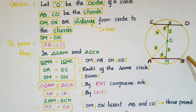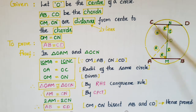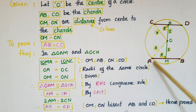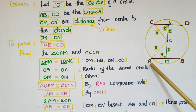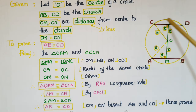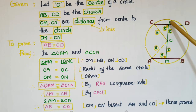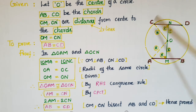Since AM equals BM, and AM equals CN, we get 2AM equals 2CN. Now 2AM means AM plus BM, which equals AB. So 2AM means AB, and 2CN means CD. Therefore AB is equal to CD. Thus, if the distances from the center of the circle to the chords are equal, then the chord lengths are equal.